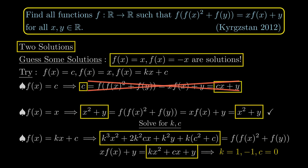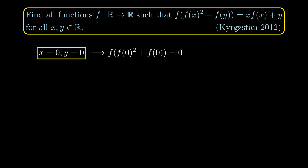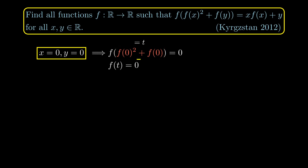To start, let's set x and y equal to zero. There are terms that will vanish, leaving us with the following equation. This step in general is a good way to start solving a functional equation because it makes terms vanish. What we get tells us that there is some real number value — which I'll let the inner term be t — such that f(t) = 0.